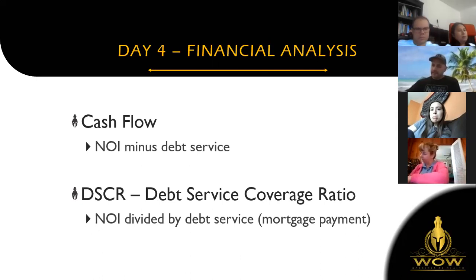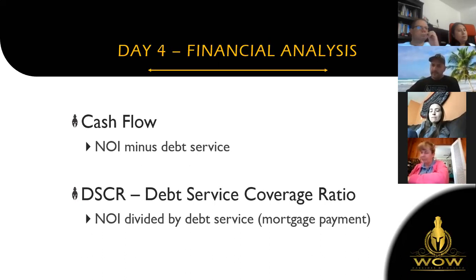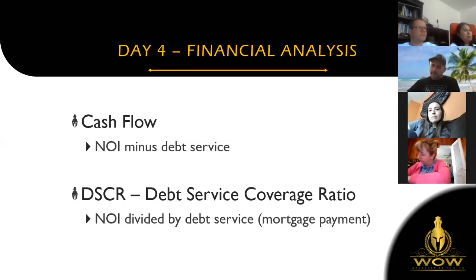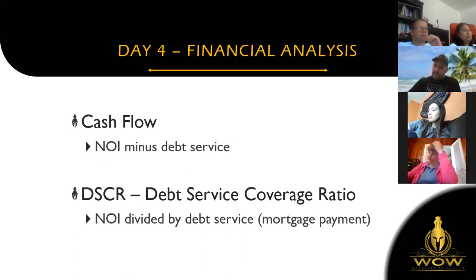Next are cashflow and DSCR — debt service coverage ratio. Cashflow is super simple: it's just the net operating income minus the debt service. I wasn't planning on doing this in the five day challenge, but I think I might pull up the financial analysis calculator and show you guys how this plays out, because there's not a lot of teaching on this. Debt service coverage ratio is the net operating income divided by the debt service.